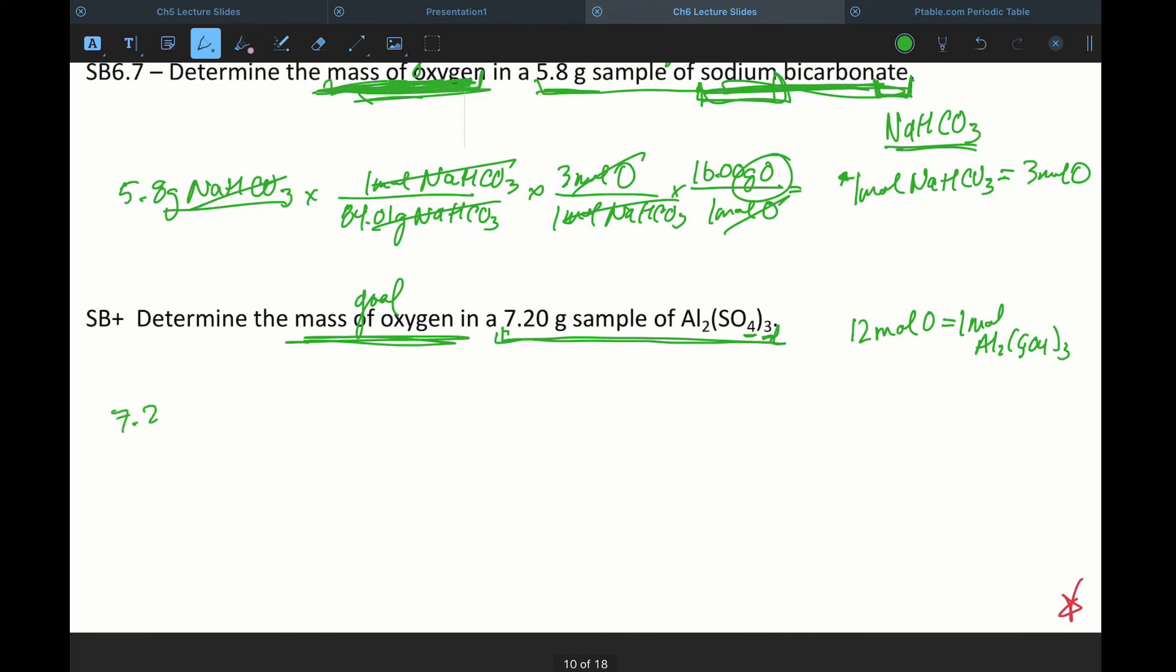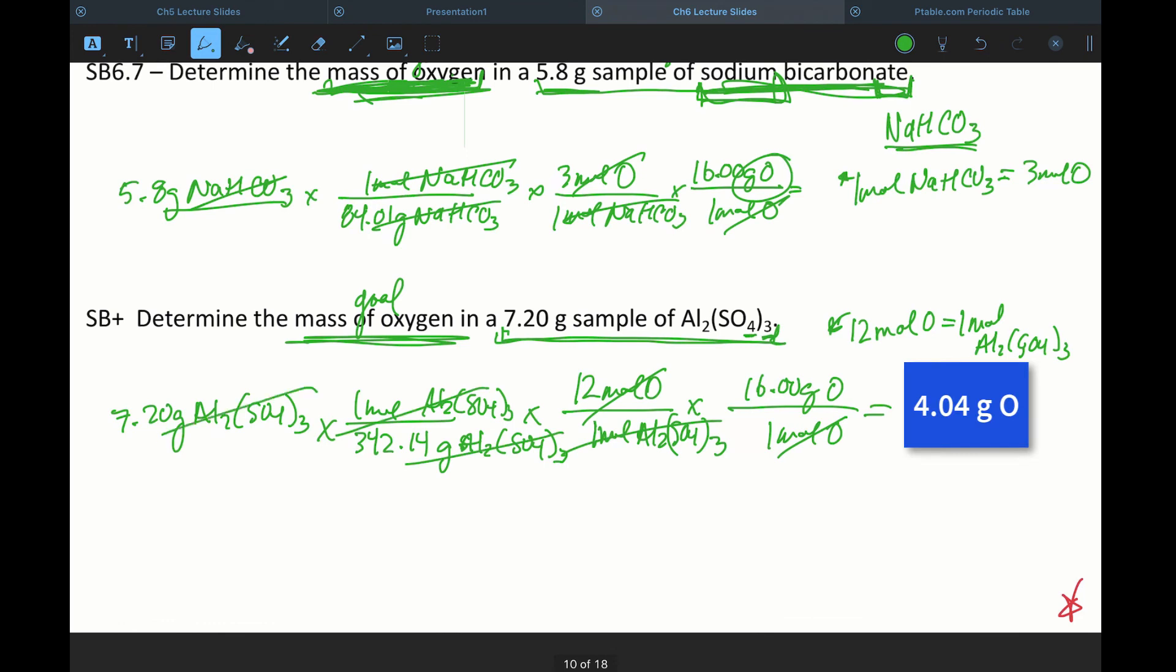So then, 7.20 grams of Al2(SO4)3, molar mass now. So we have 342.14 grams of Al2(SO4)3 to every one mole of Al2(SO4)3. And for every one mole of Al2(SO4)3, going back to here, there are 12 moles of oxygen. And for every one mole of oxygen, I know that is 16 grams. And we'll see that all of our units cancel. And we just need to do the math.